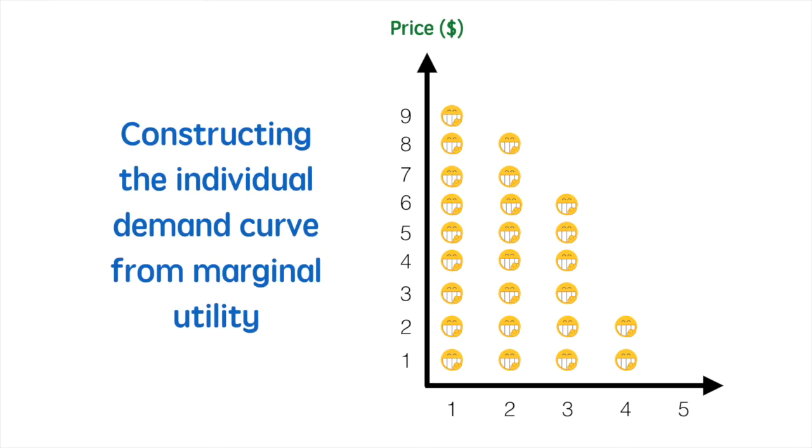Let's use that same information to convert the marginal utility graph into a demand curve. We switch out marginal utility for price and leave the x-axis unchanged. At higher prices, the quantity demanded is low, and as the price drops, there is a greater quantity demanded.